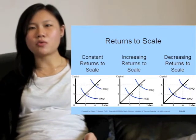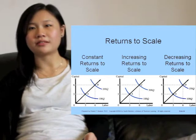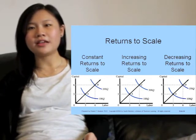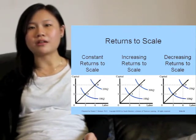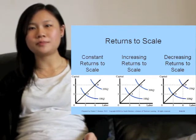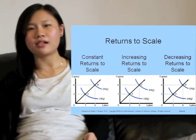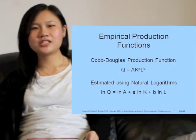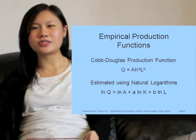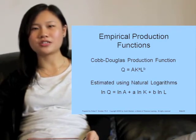In this example, when all inputs are increased by 100%, the output in the left panel increases by 100%, showing constant returns to scale. The output in the center panel increases by 200%, indicating increasing returns to scale, while the increase in the right panel is only 50%, showing decreasing returns to scale. This is the production function most commonly used in empirical estimation, called the Cobb-Douglas production function.